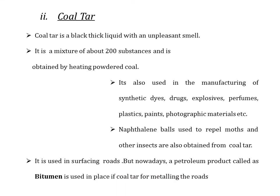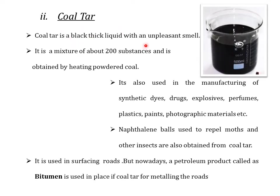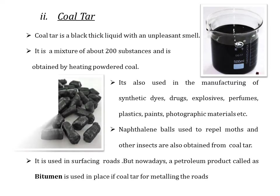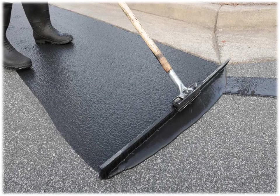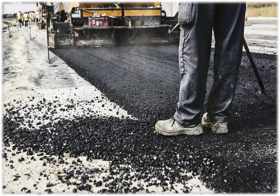The second product is coal tar. Coal tar is a black thick liquid with an unpleasant smell. It is a mixture of about 200 substances — that is, it consists of different carbon compounds like naphthalene, benzene etc. It is obtained by heating powdered coal. Uses of coal tar include the manufacturing of synthetic dyes, drugs, explosives, perfumes, plastics, paints, and photographic materials. Naphthalene balls used to repel moths and other insects are also obtained from coal tar. Coal tar is used in surfacing roads, but nowadays a petroleum product called bitumen is used in place of coal tar for metalling roads.